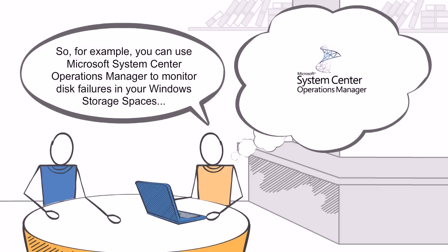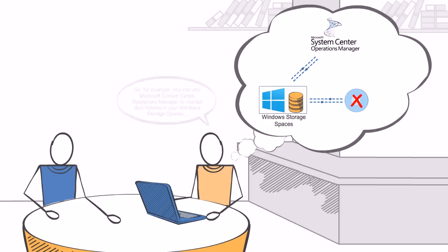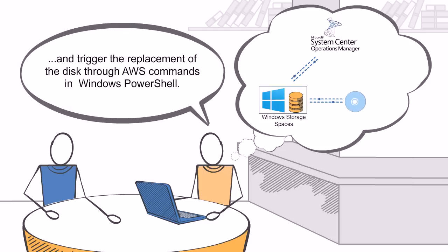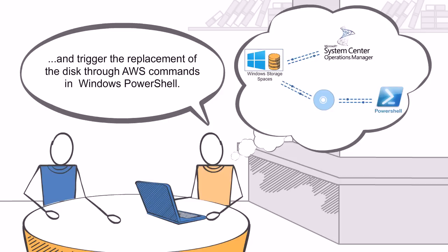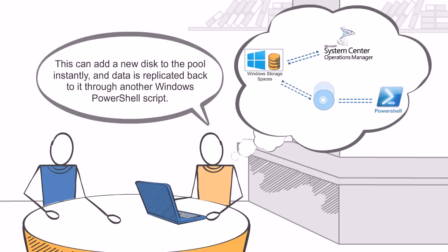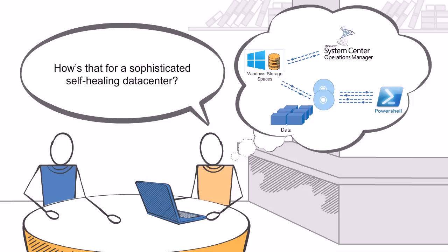For example, you can use Microsoft System Center Operations Manager to monitor disk failures in your Windows Storage Spaces and trigger the replacement of the disk through AWS commands in Windows PowerShell. This can add a new disk to the pool instantly, and data is replicated back to it through another Windows PowerShell script.